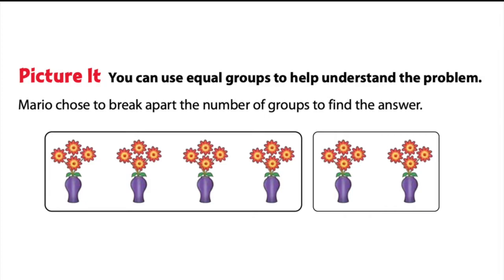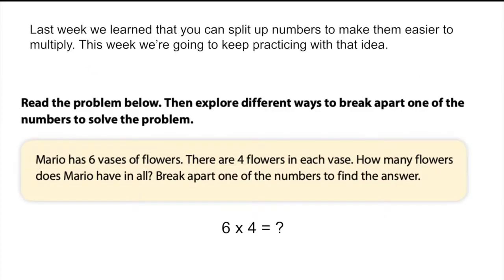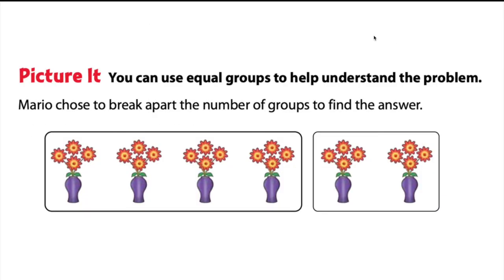So we can picture it thinking about equal groups. Now when Mario solved this problem, he chose to break apart the number of groups to find the answer. So instead of thinking six times four, he's thinking about breaking the six into four vases here and two vases there.